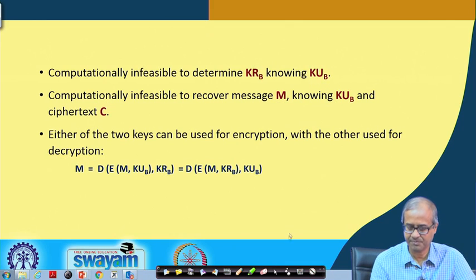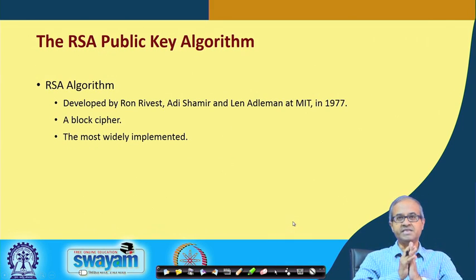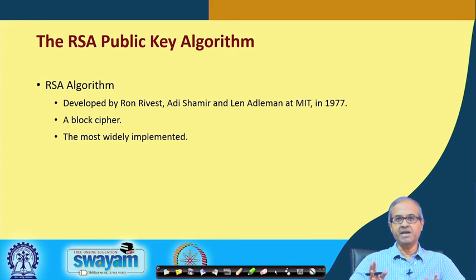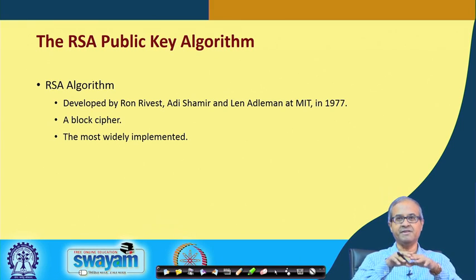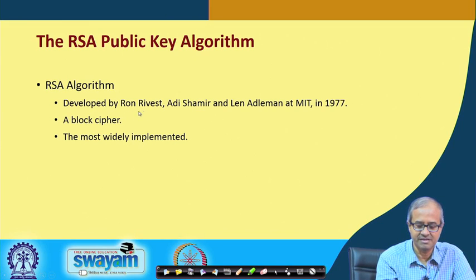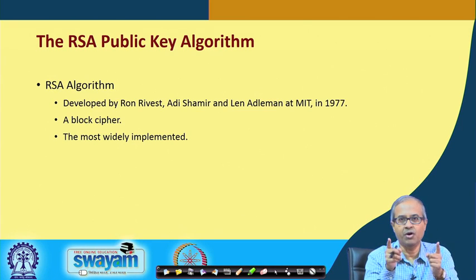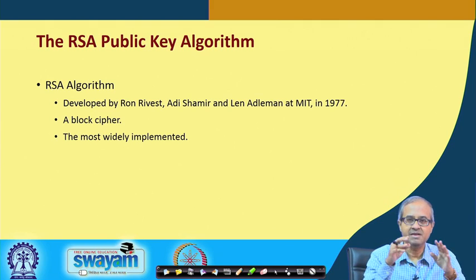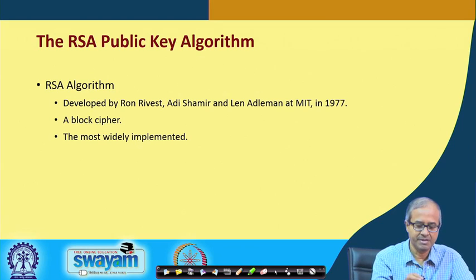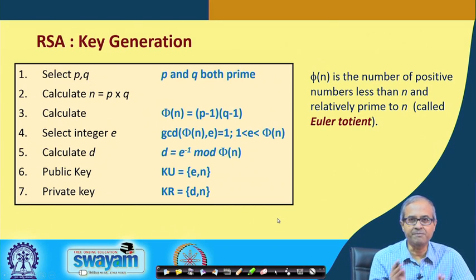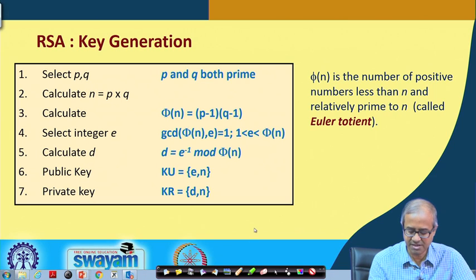RSA is one of the public key algorithms which was proposed long back in the 1970s, but it has survived several decades and is still considered to be good. In fact, the entire internet is being driven or based on this RSA algorithm as of today. RSA are the initials of the inventors Rivest, Shamir, and Adelman. This is also a block cipher - you can take a block of your data, the size of the block can vary, and you can encrypt it. This is the most widely used public key algorithm. I am briefly telling you how the key pairs are generated in RSA so you will understand how RSA encryption and decryption works.